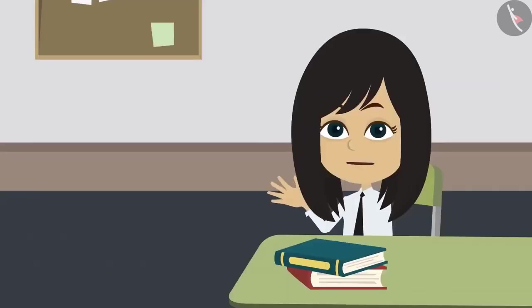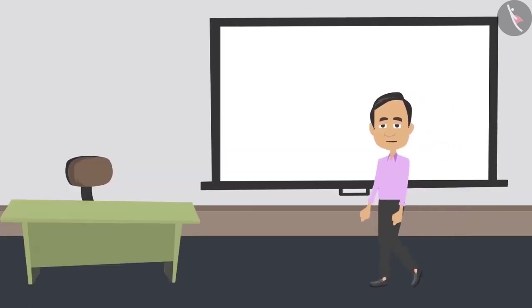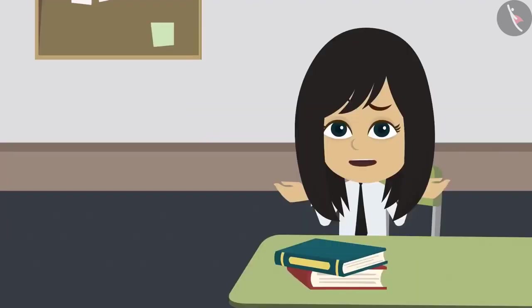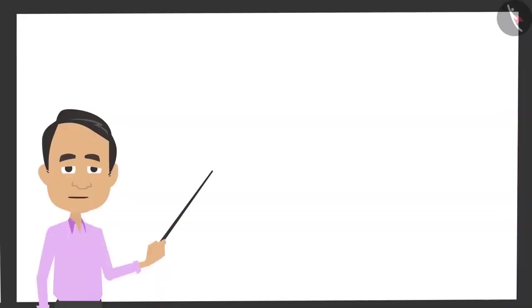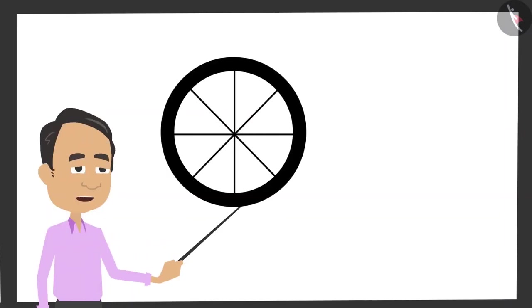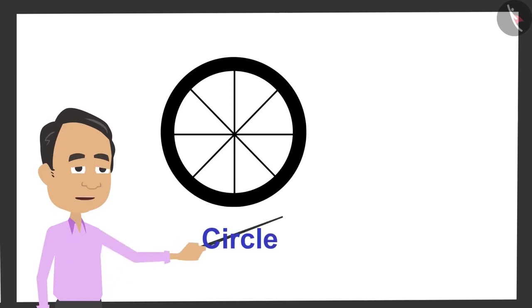Sir, a round figure is called a circle. Yes, but what is a round figure? What does this mean? Let me explain. I will show you the wheel of a bicycle. It is round, that is, in the shape of a circle.